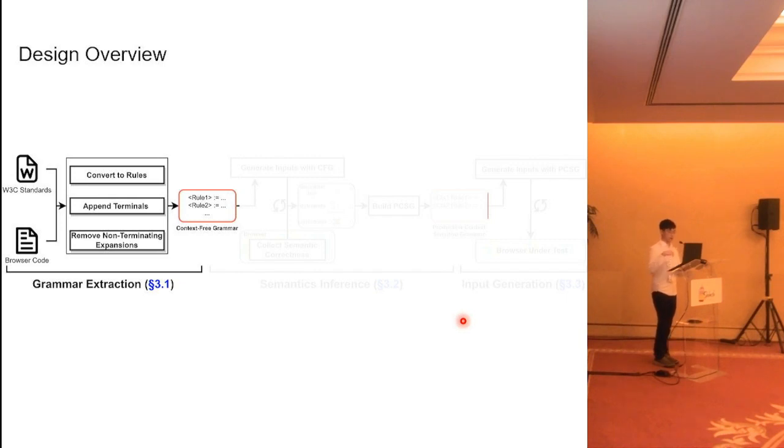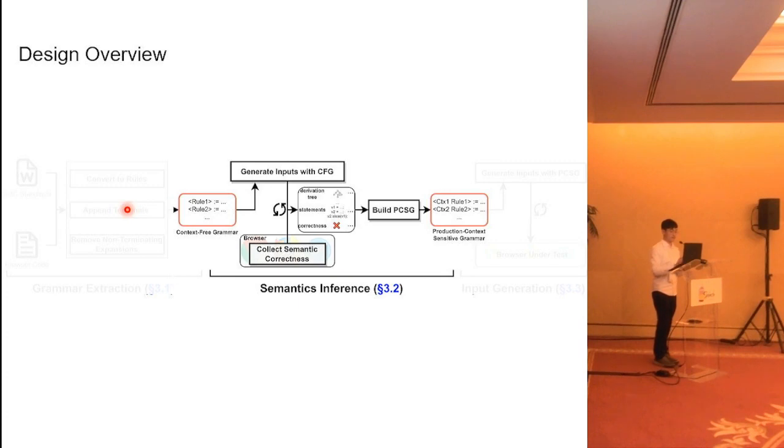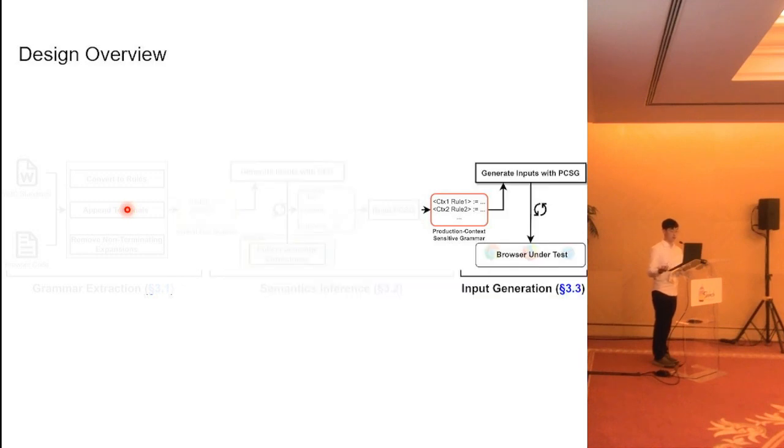Regarding our system design, the first step is grammar extraction. We extract a context-free grammar from the W3C standards and browser source. Next, we want to ensure the semantic correctness of our extracted grammar. The whole process is based on browser execution feedbacks. As a result, we obtain a grammar with semantic information. The final step is to use the grammar to generate high-quality test cases. We will detail these three steps one by one.